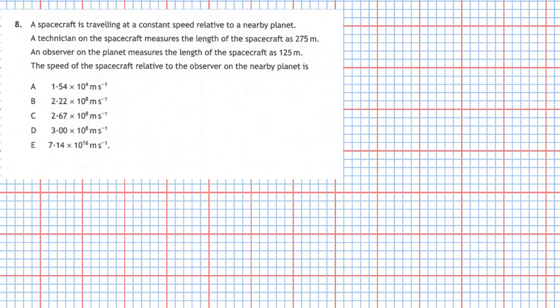Question 8 from Section 1 of the 2019 Higher Physics examination. A spacecraft is travelling at a constant speed relative to a nearby planet. A technician on the spacecraft measures the length of the spacecraft as 275 metres. An observer on the planet measures the length of the spacecraft as 125 metres. The speed of the spacecraft relative to the observer on the nearby planet is — and we're given the usual five choices.